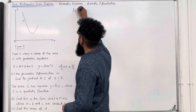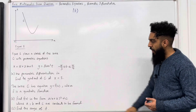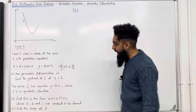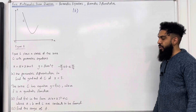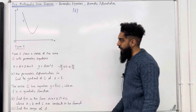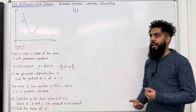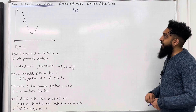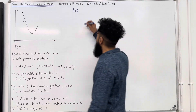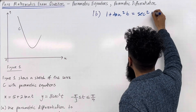In part B, we want to convert the parametric equation of the curve C into the Cartesian equation y equal f of x, written in the form a(x plus b) squared plus c. Looking at the parametric equations, there is a tan and a sec involved, so we need an identity that connects them. That identity is 1 plus tan squared t equals sec squared t.